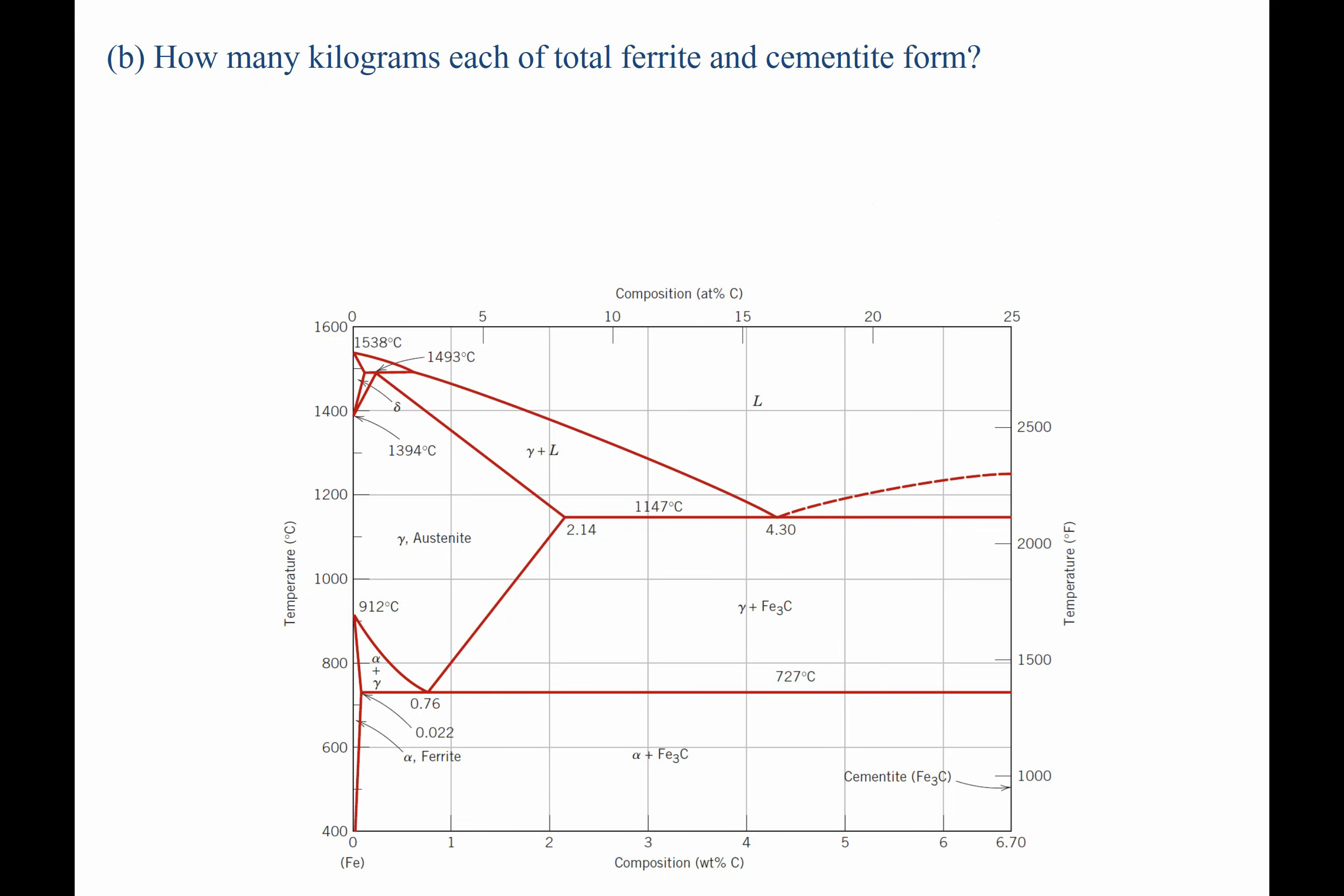Next question says, How many kilograms each of total ferrite and cementite will form? Well, since we're talking about ferrite and cementite, that's down here in this region. So we're going to cool it down this line, down below the 727°C. Now, we can recognize that there are different lengths of line that correspond to the lever rule. We have this length of line from 1.15 all the way up to 6.7. We have this length of line from 0.022 up to 1.15. And we have the combined total length of the line from 0.022 all the way up to 6.7.